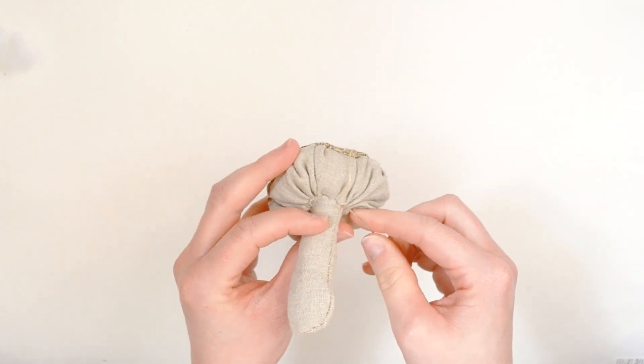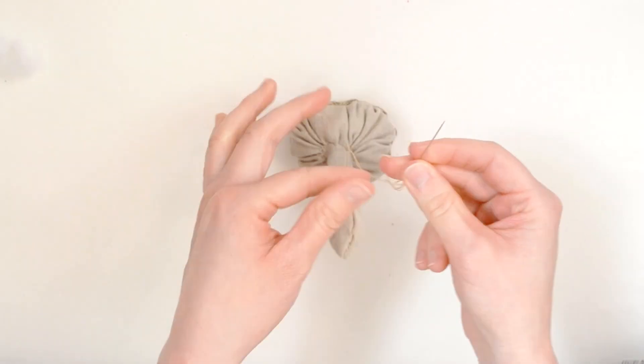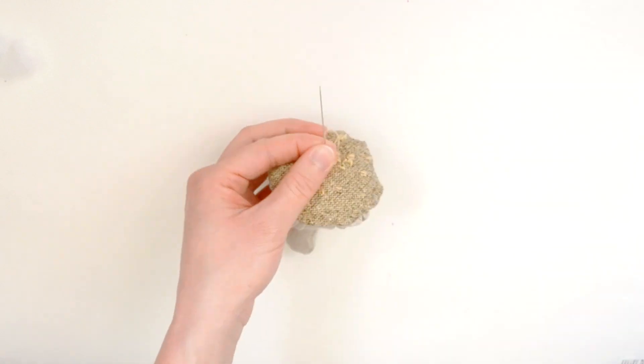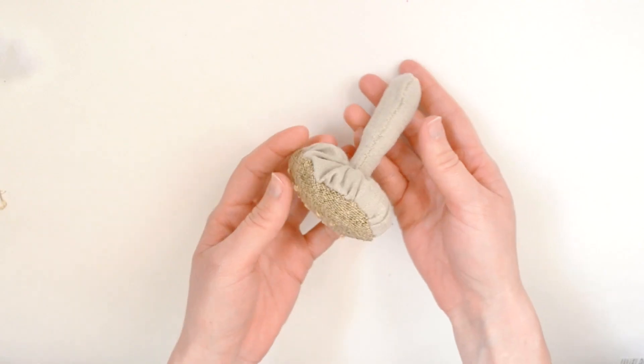When you feel like your stem and cap are securely attached, tie a knot and bring your remaining thread to the edge, then clip off any excess.